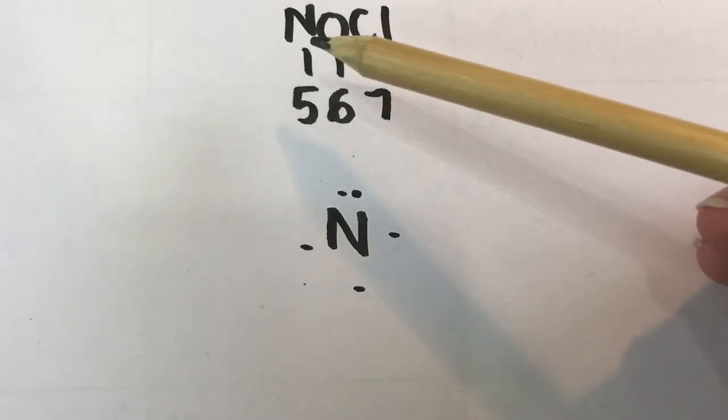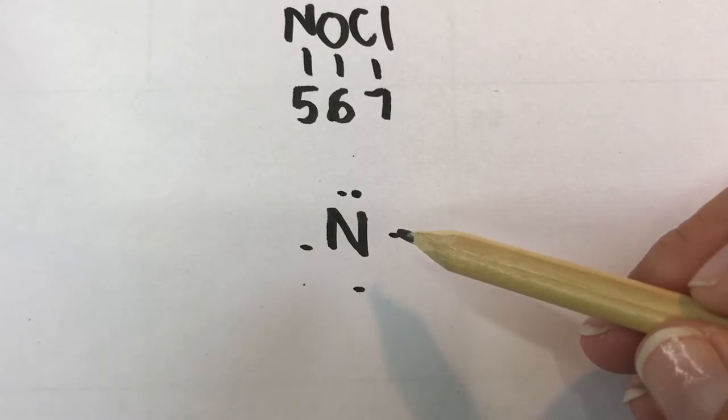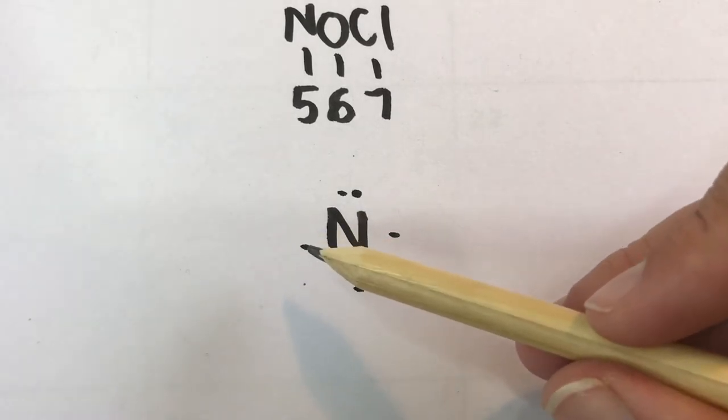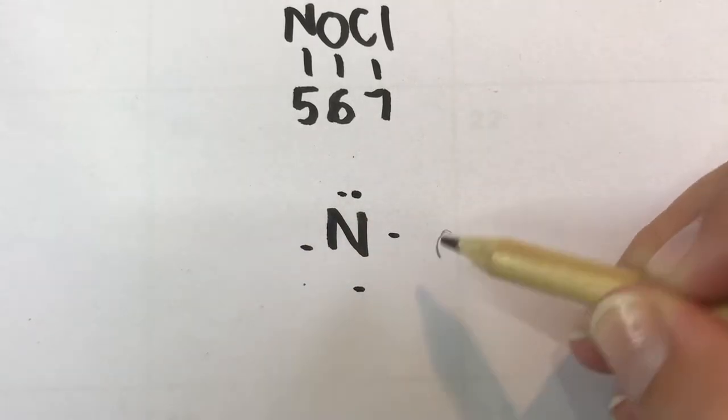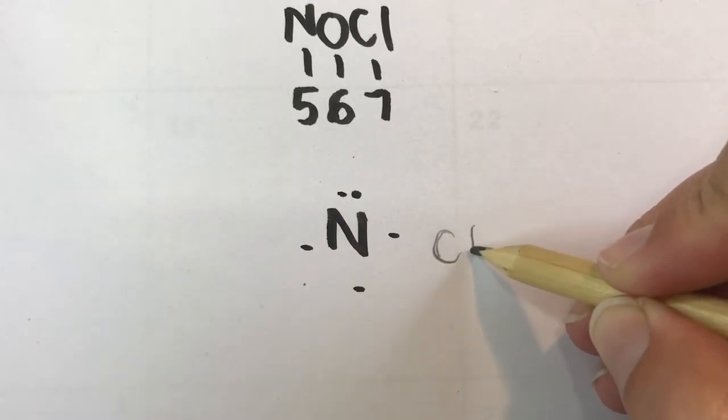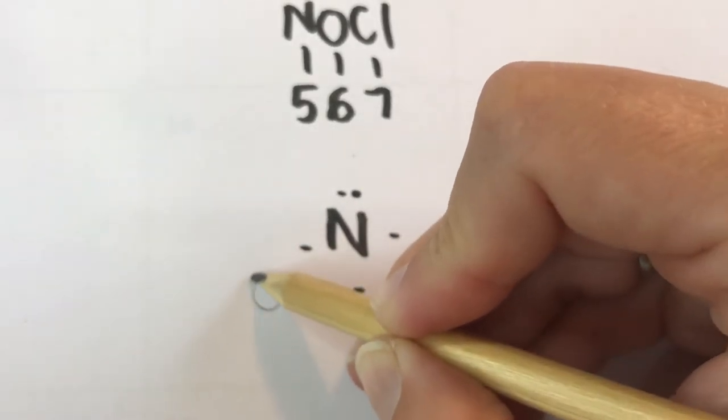So I have to add my two outer atoms and I'm going to choose areas where there is a single electron around the nitrogen and I'm just going to spread them out evenly for now. So I'll add my Cl here and my O over here.